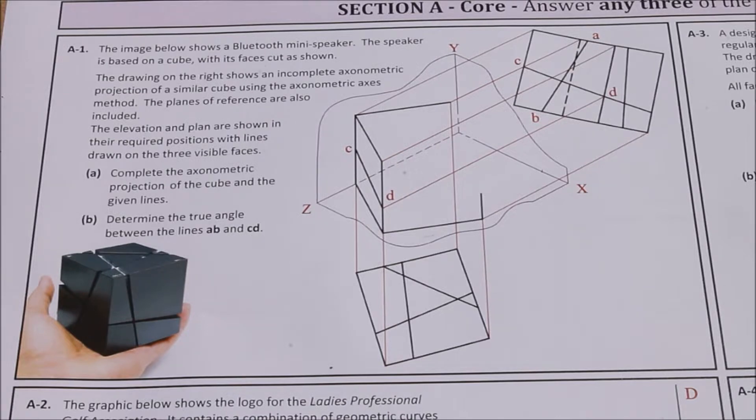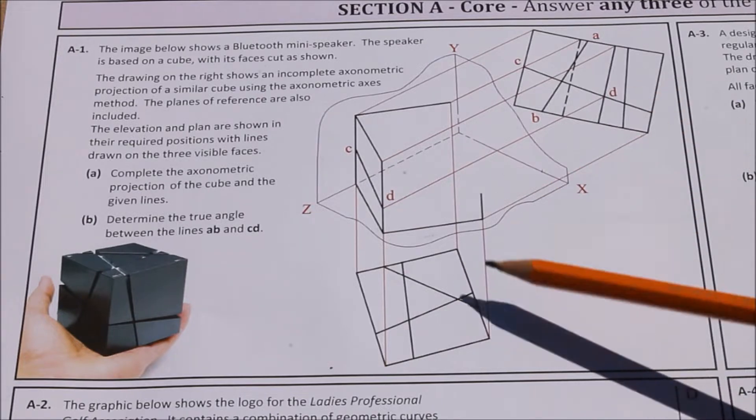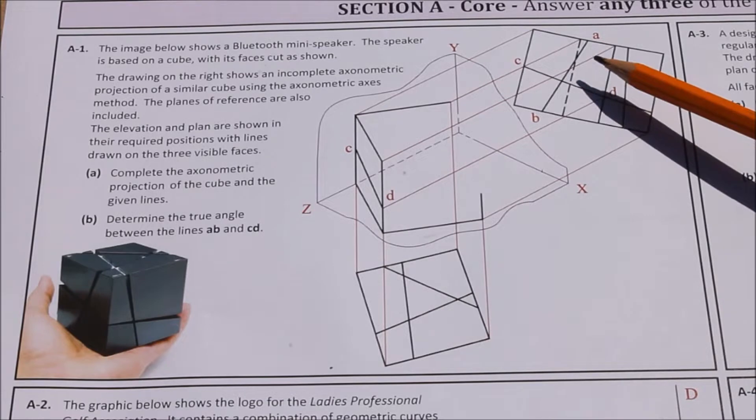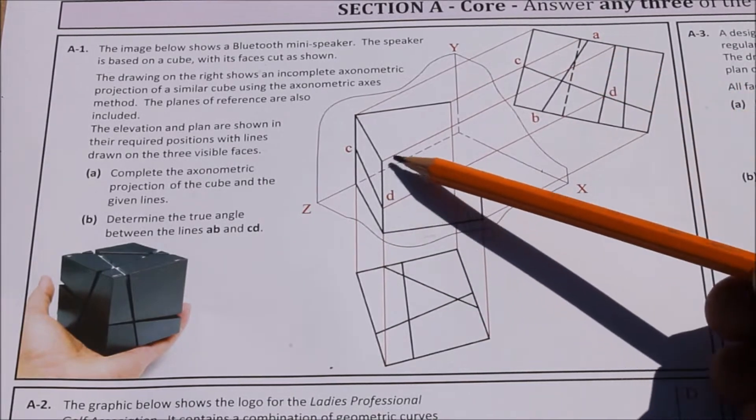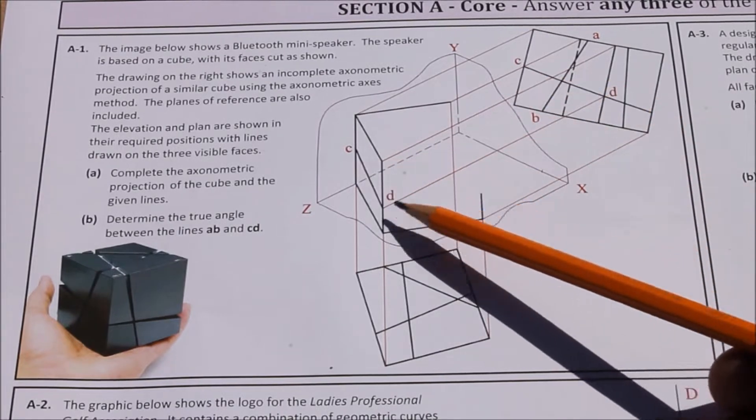So first things first, part A is complete the axonometric projection of the cube and the given lines, and then B, determine the true angle between lines AB and CD. So obviously you start with A first to complete the axonometric projection of the cube and the given lines. So this is an axonometric question coming up as a short question. If you look at what you're given, you're given the plan here.